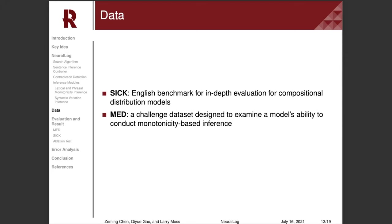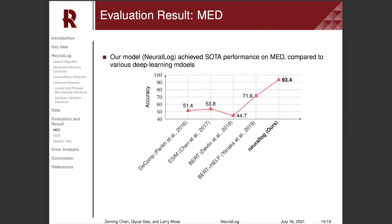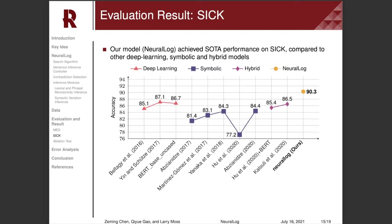We conducted experiments on two datasets, the SICK dataset and the MAD dataset. On the MAD dataset, we compared our system to multiple neural network baselines. Overall, our system outperforms all baselines in terms of accuracy by a significant amount. The results validate our system's ability for accurate and robust monotonicity-based inference.